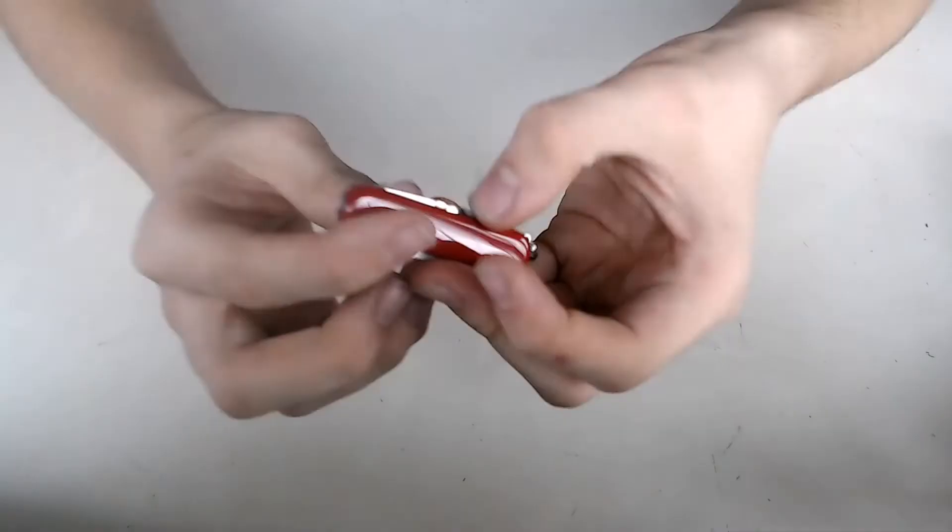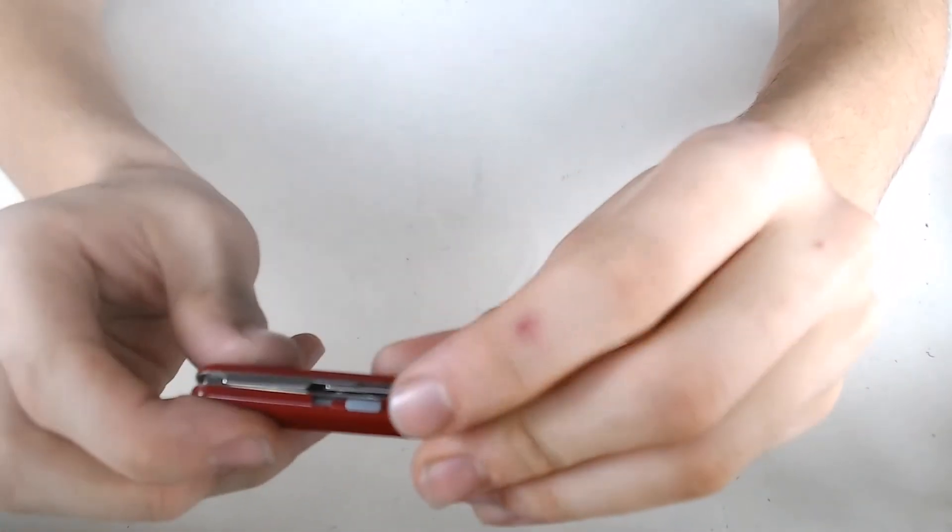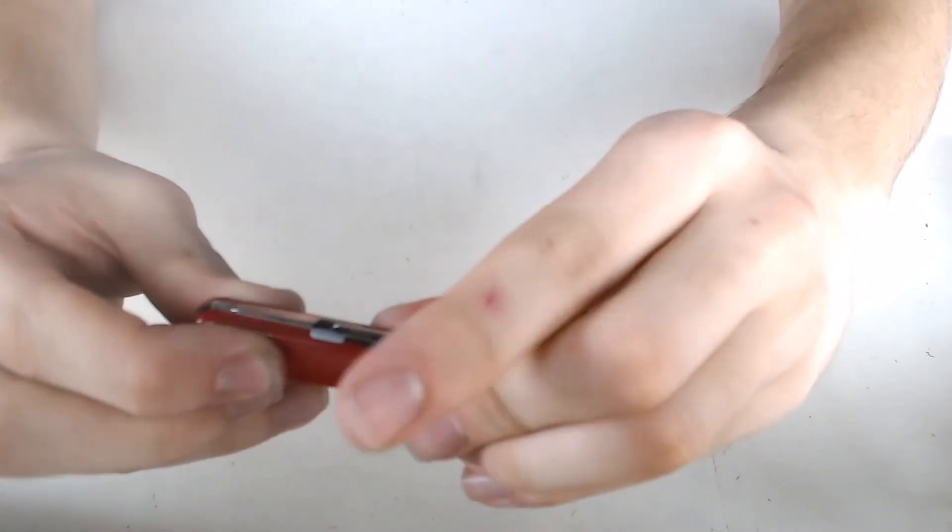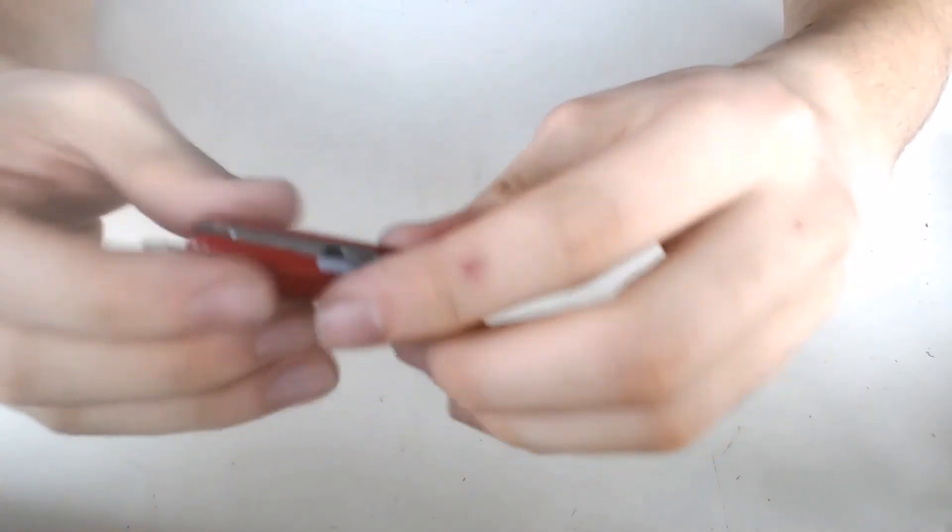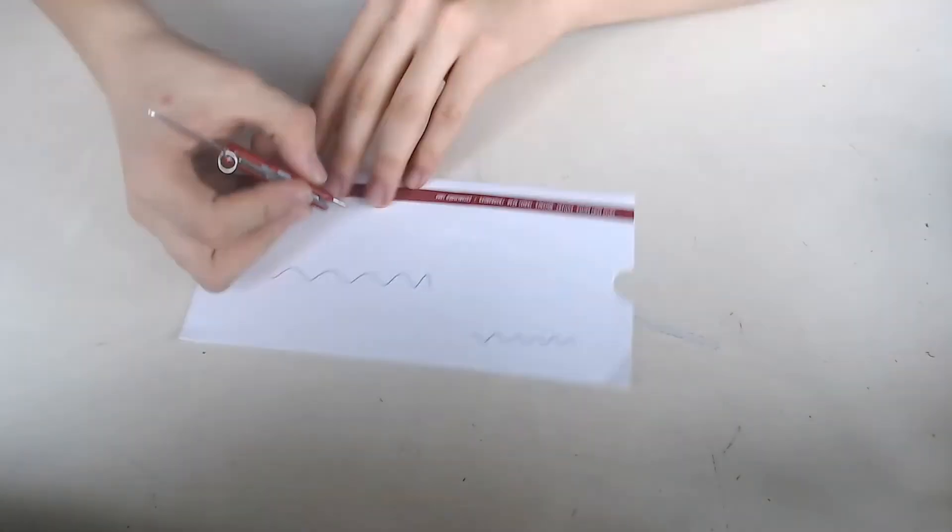The pen - to open the pen, what you do is you press the blue part into the knife and then push it forward. Then you'll have the pen. To use the pen, you'd want to bring out the nail file, and then you can write.